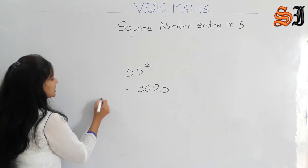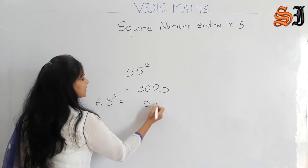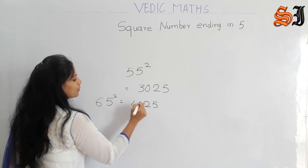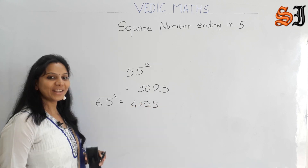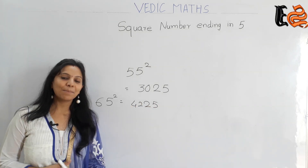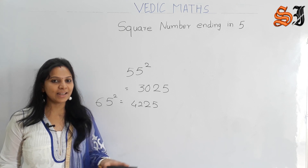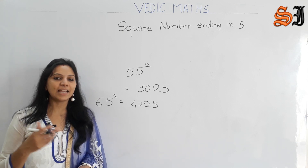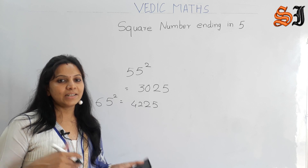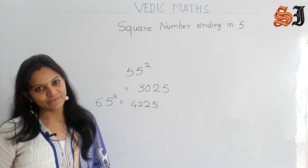For 65 squared: 5 squared is 25, then 6 and 7 is 42 — so 4225. For 95 squared: 9 and 10 is 90, giving 9025. For 85 squared: 8 and 9 is 72, giving 7225. Square numbers are very easy with this method.